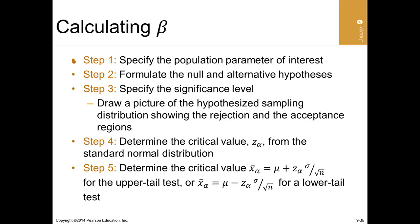We can calculate beta: since alpha plus beta must equal one, if your alpha is 0.05 your beta is 0.95; if alpha is 0.1, beta is 0.9. The steps are simple — just know how to compute your alpha or your p-value.